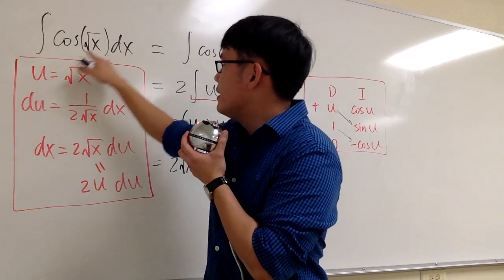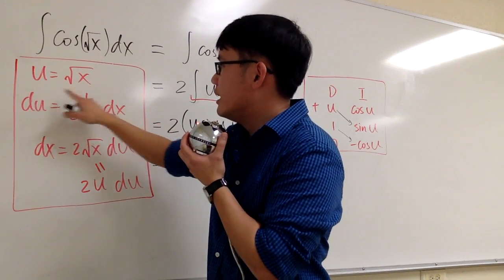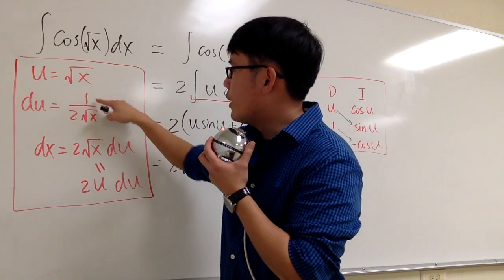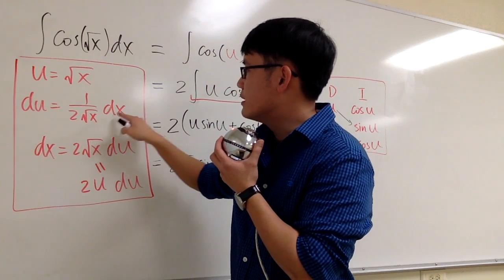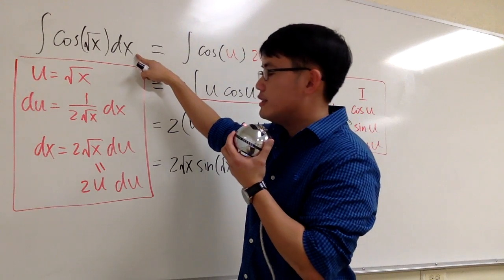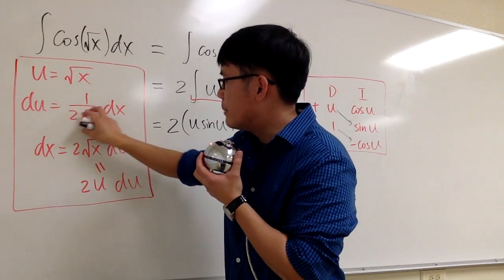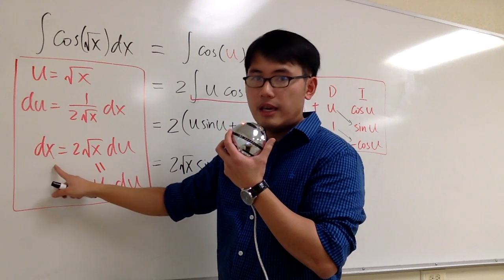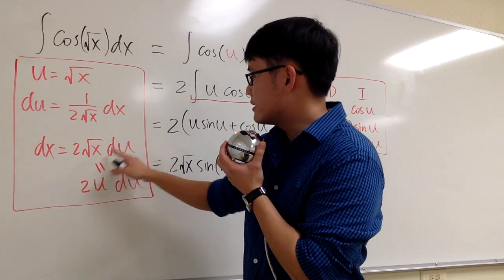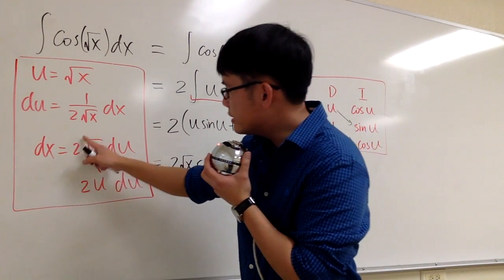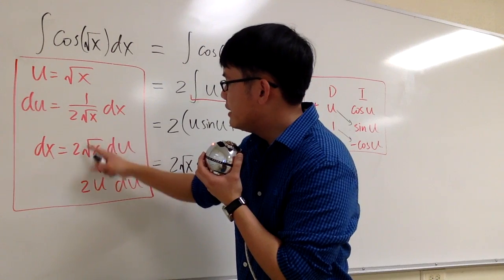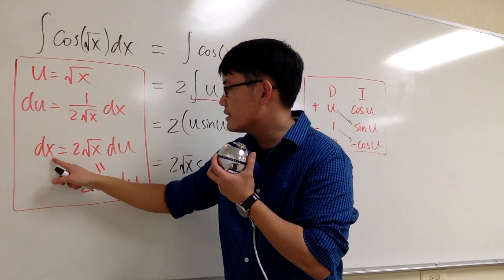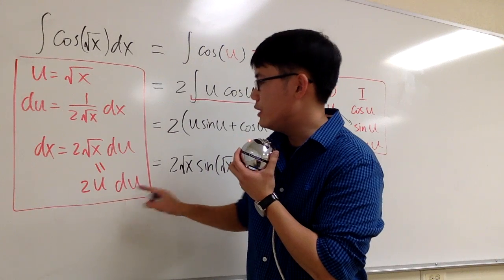I'm going to let u be the inside function, which is square root of x. Let's differentiate both sides. We get du equals 1 over 2 square root of x, dx. Then I need to isolate the dx, so let's multiply both sides by 2 square root of x. In other words, dx will be 2 square root of x du. Notice that we have a square root of x right here — this is the same as u. So I can write dx equals 2u du.